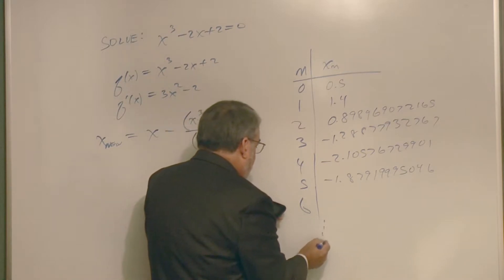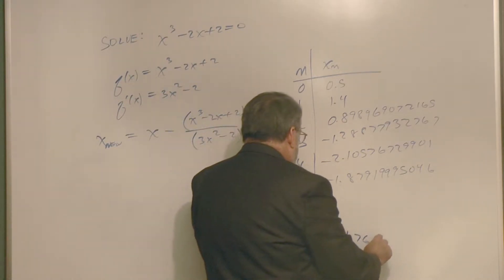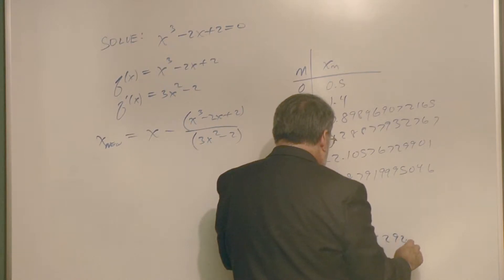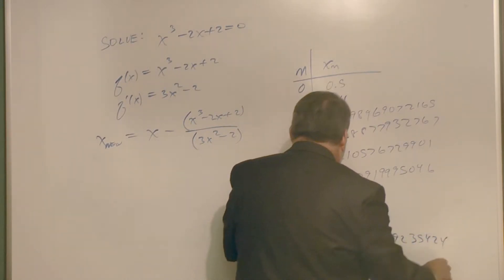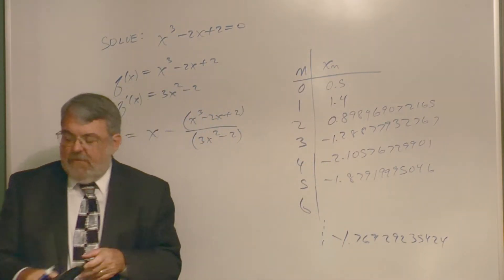So I lost track of how many places but finally gets down to minus 1.769, 1.76929235424. So it was about the eighth or ninth step where it finally converged.